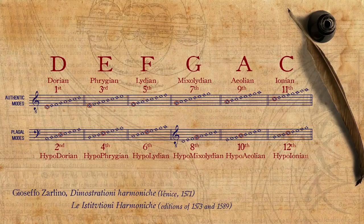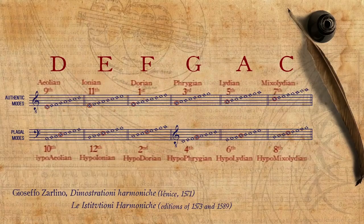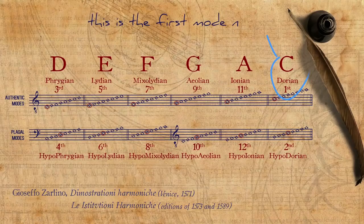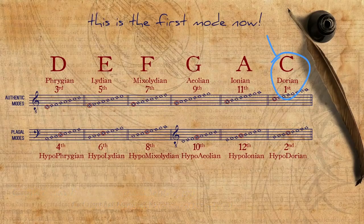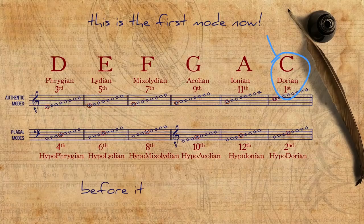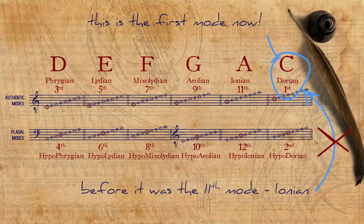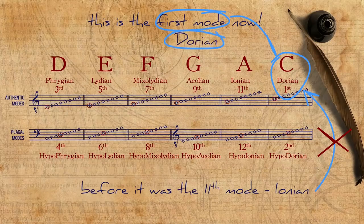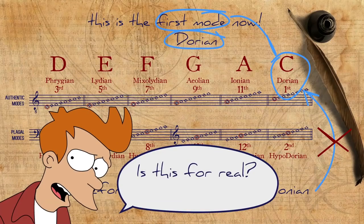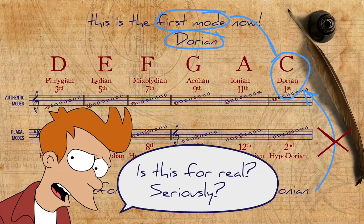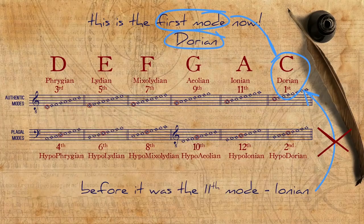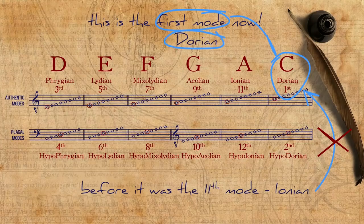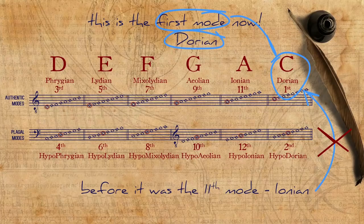Some years later, Zarlino decided to renumber the twelve modes, having the first mode start on the finalis C. So that which was previously the eleventh mode with the Greek name Ionian now became the first mode with the Greek name Dorian. Whatever reasons he had for that renumbering, it ended up being simply too confusing. And although this numbering was adopted by some, on the whole it just added another level of difficulty to a subject already full of controversies.